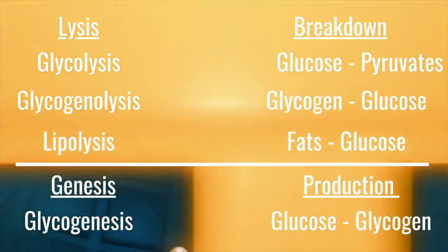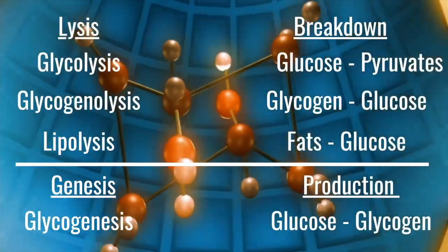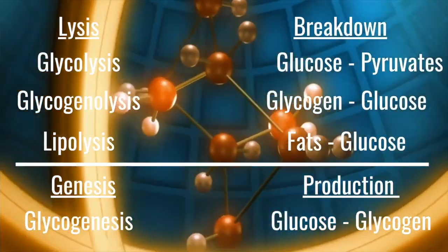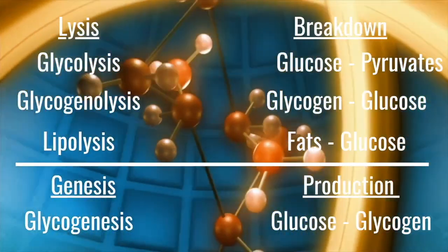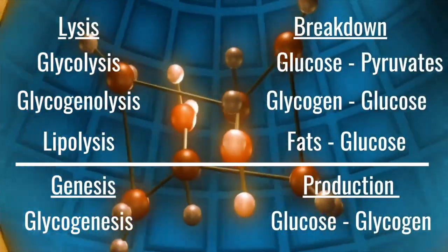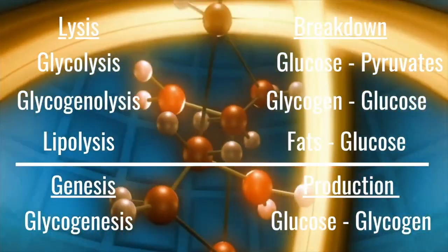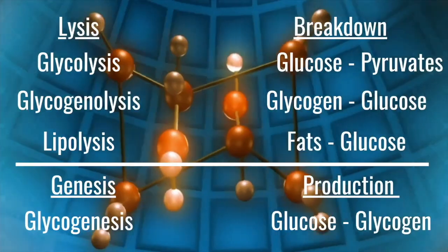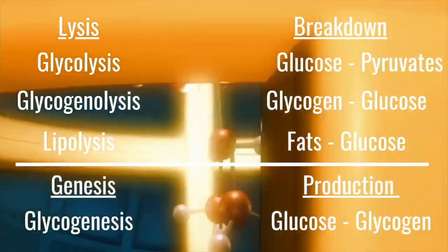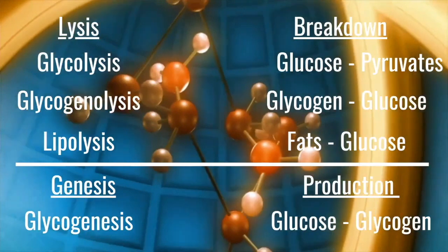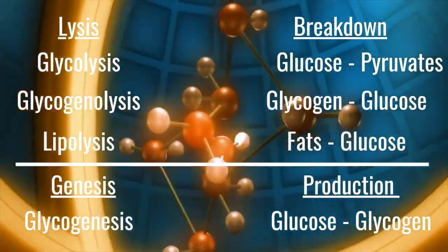Before we start, we're going to look at some key terms that are really important within this section. The word lysis as a suffix means breakdown. So we've got three terms here: glycolysis, which is the breakdown of glucose into pyruvate, and we'll learn that more during the energy systems; glycogenolysis, which is the breakdown of glycogen into glucose; and lipolysis, which is the breakdown of fats into glucose.